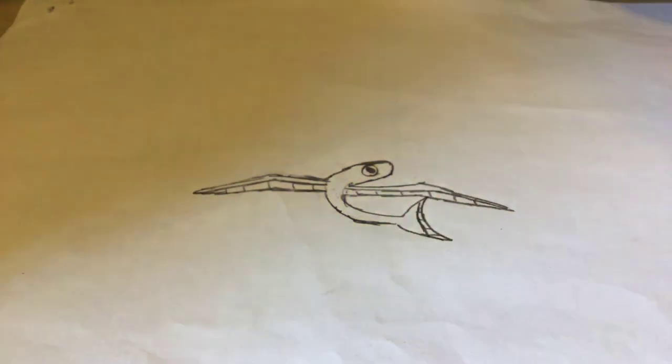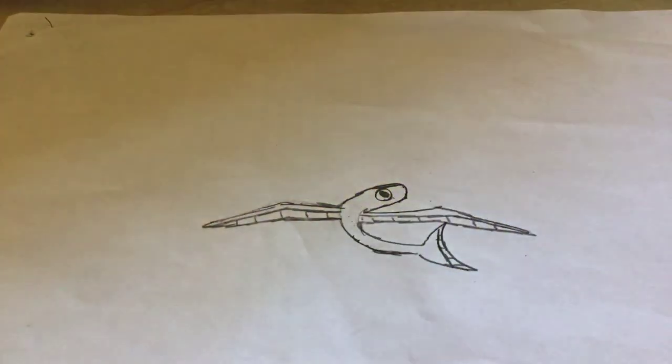And here are some facts. The flying fish doesn't really fly. It only glides. But it looks like it's flying because it can glide for long distances.